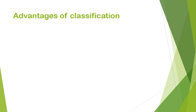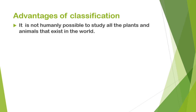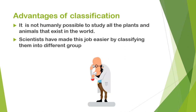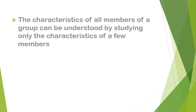Now, what are the advantages of classification? It is not humanly possible to study all the plants and animals that exist in the world, so scientists have made this job easier by classifying them into different groups. The characteristics of all members of a group can be understood by studying only the characteristics of a few members.